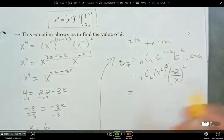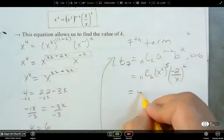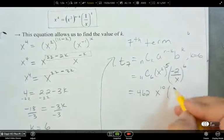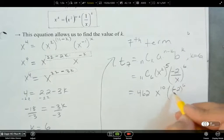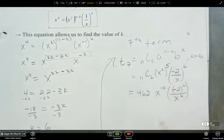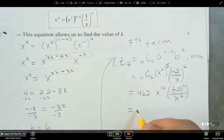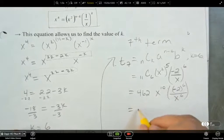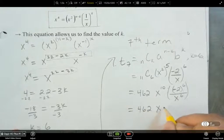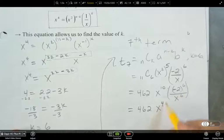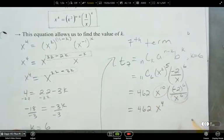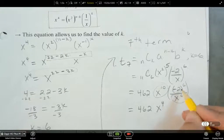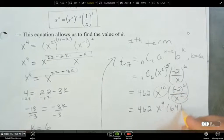11 c 6 is 462, then x to the power of 10, and now here I've got negative 2 to the power of 6, and I've got x to the power of 6. And then just combine like terms, simplify, and then you've got your answer. So x to the power of 4 for here, this x to the power of 10 over x to the power of 6 gives you x to the power of 4. And then what is negative 2 to the power of 6? That's 64.